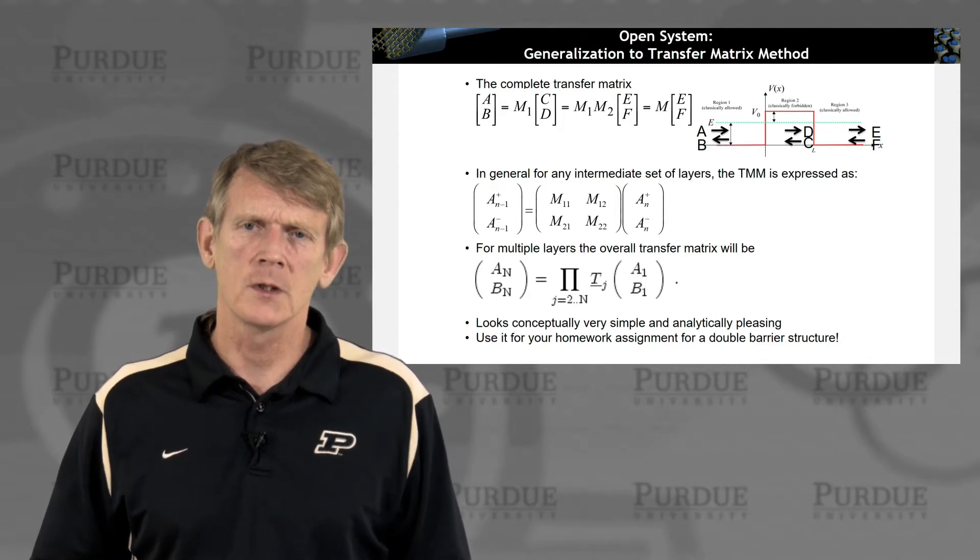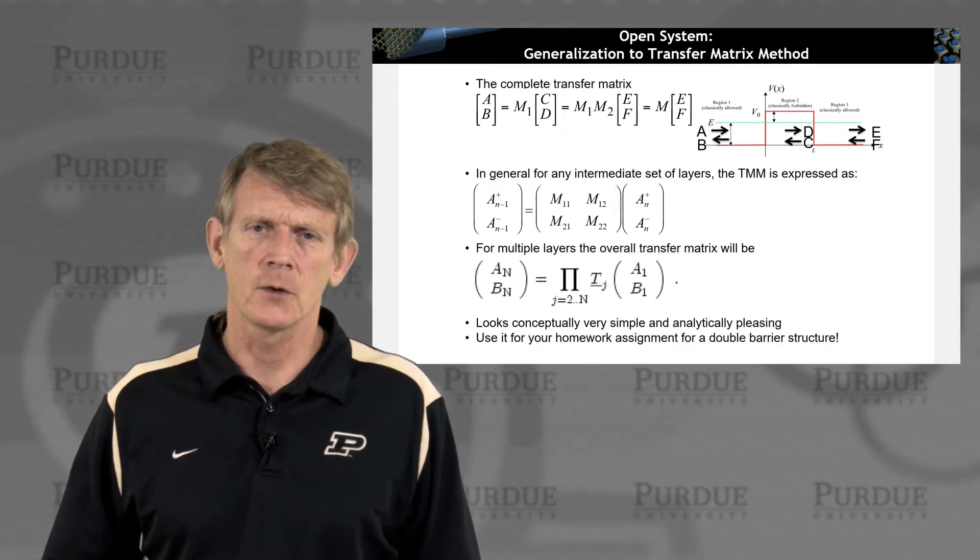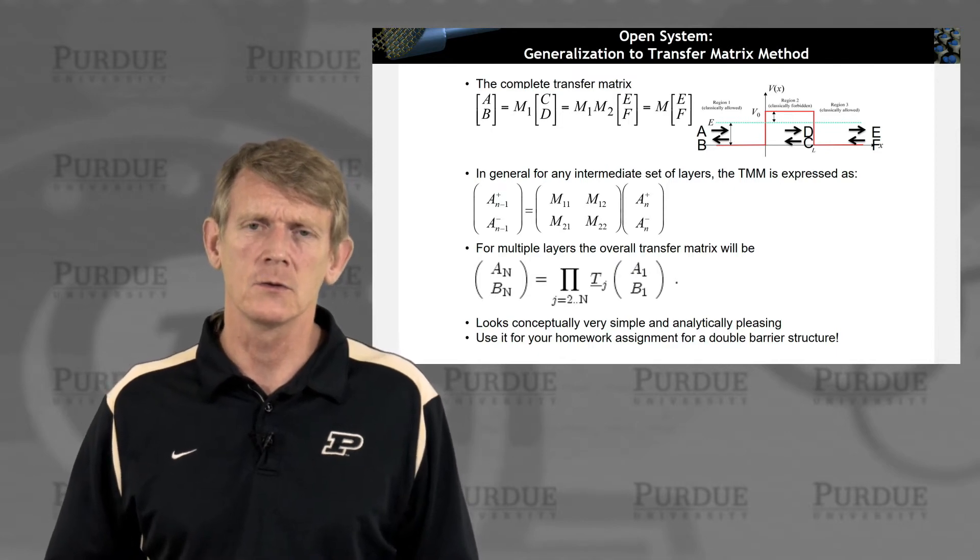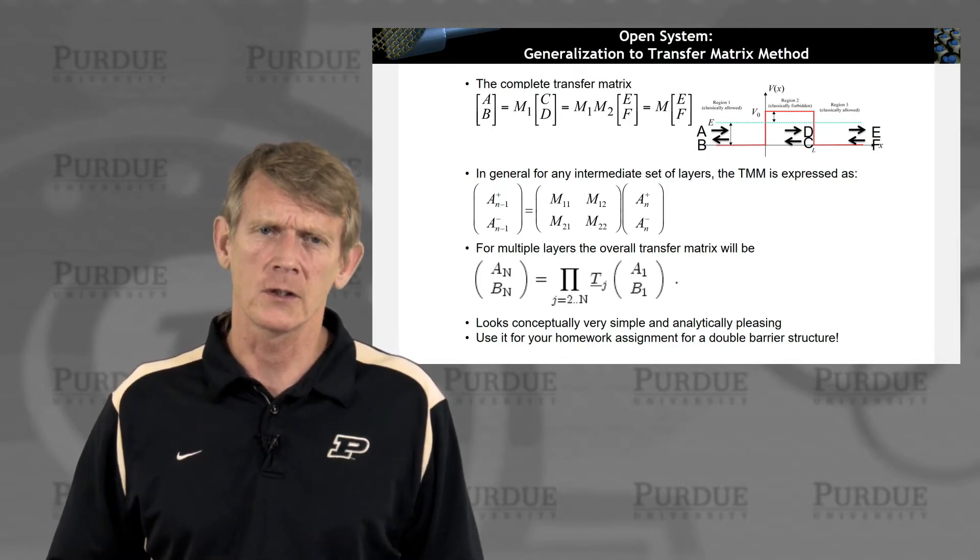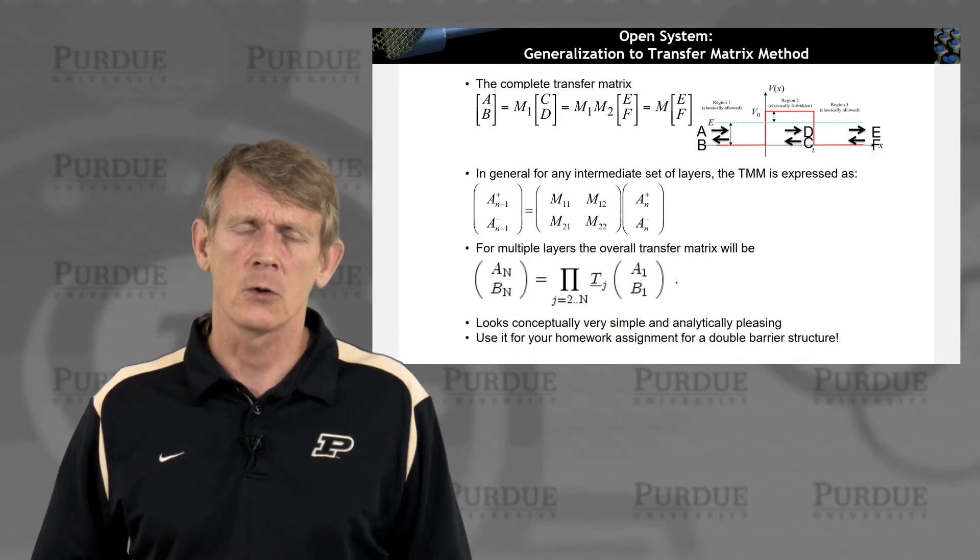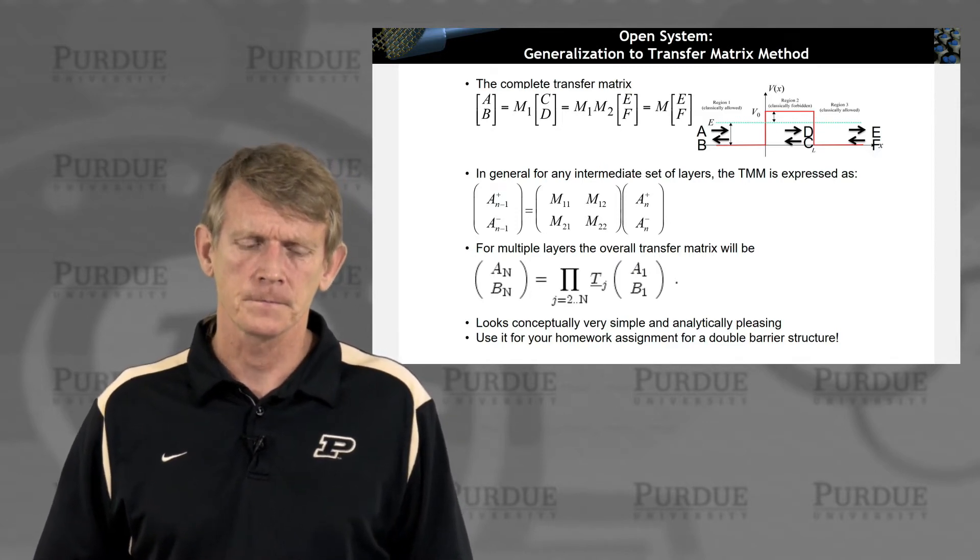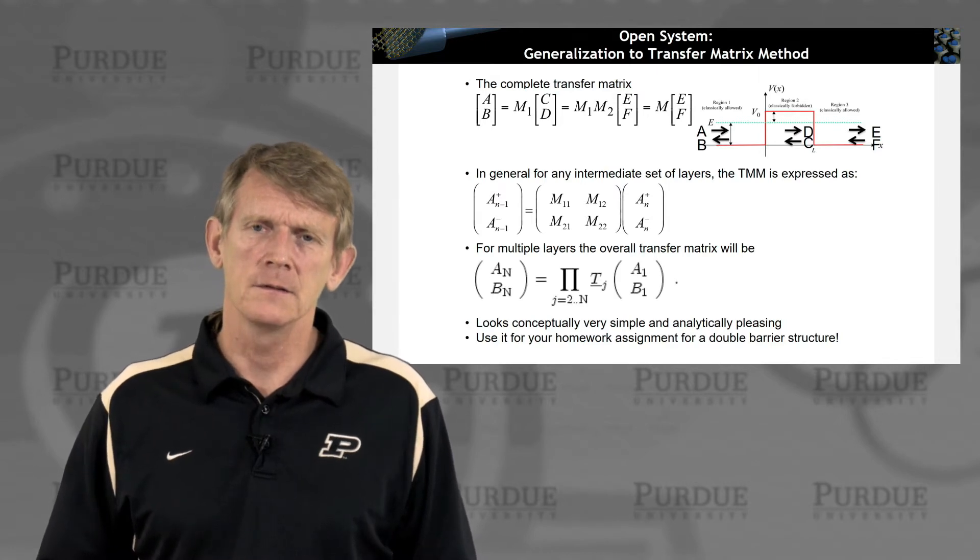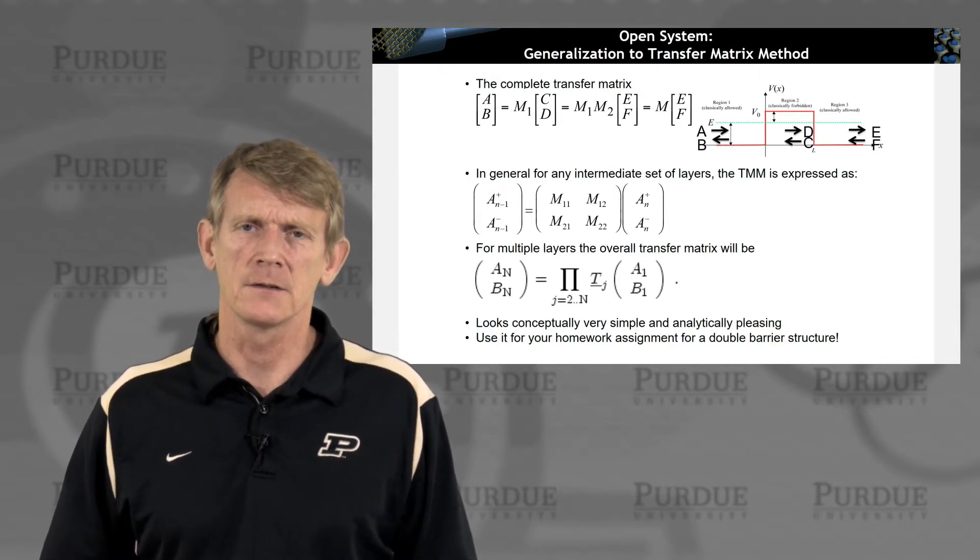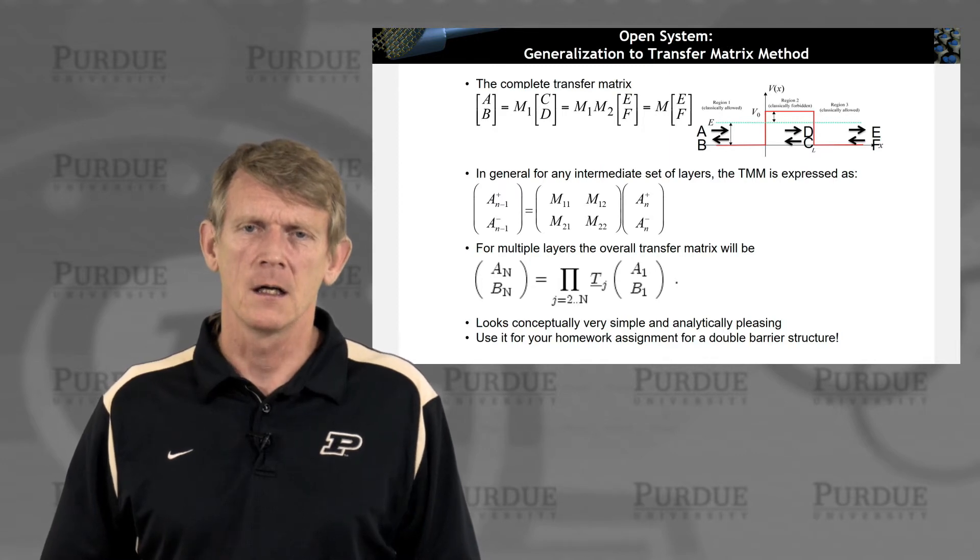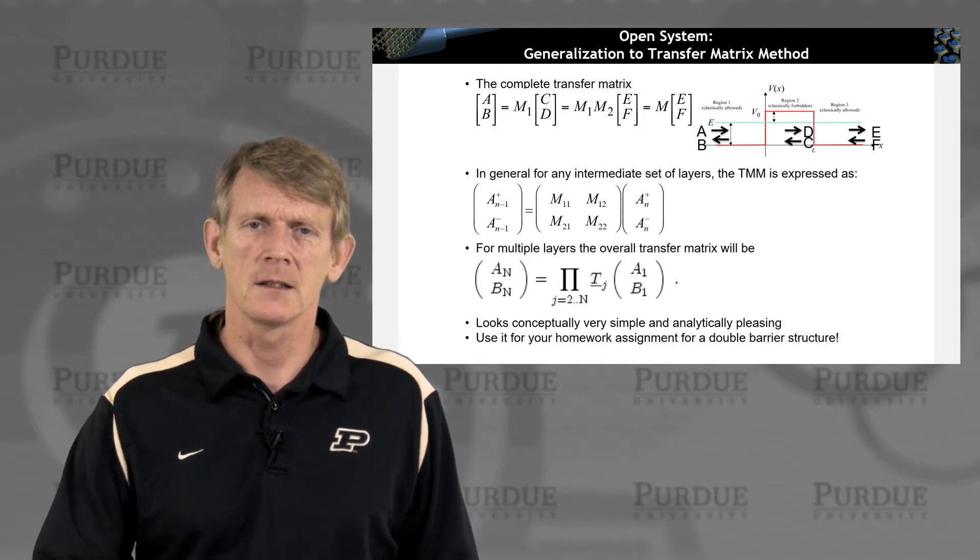That method really doesn't work all that well for realistically large devices. You need to use other methods, and I invite you to look at a course I have on Nanohub that explains that in more detail. But you use this to calculate single and double barriers quite well, and you can do this analytically.